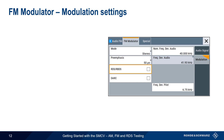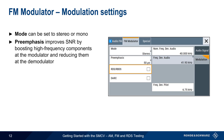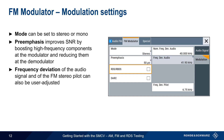The last set of FM parameters is Modulation Settings. The mode can be set to either mono or stereo. Pre-emphasis is used in FM radio to improve SNR by boosting high frequency components at the modulator or transmitter, and then reducing them at the demodulator or receiver. On the SMCV, pre-emphasis can be switched on or off and has user-configurable parameters. The frequency deviation of the audio signal and the FM stereo pilot are likewise user configurable. This dialog is also where RDS/RBDS and/or DARC can be enabled.